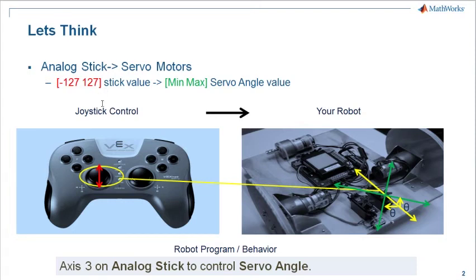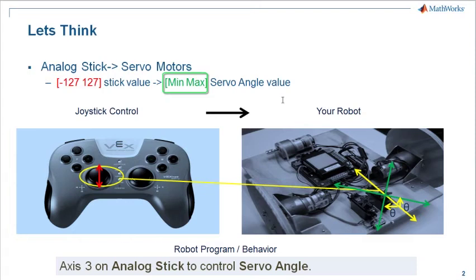The full range of the analog stick goes from minus 127, which is the minimum value, to positive 127, which is the maximum value. You can map the analog stick in such a way that it can actually control the full range of your servo motor angle.